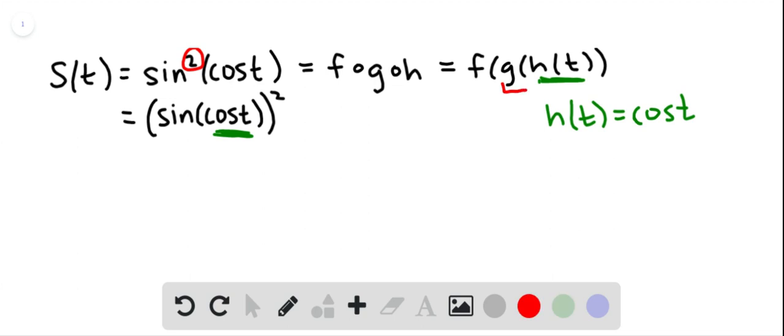Now the next layer would be g. h is inside g. So what's the next layer we see? The next layer we see is sine.